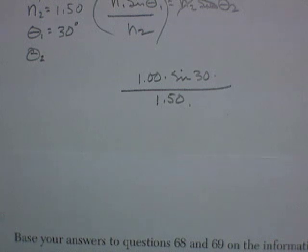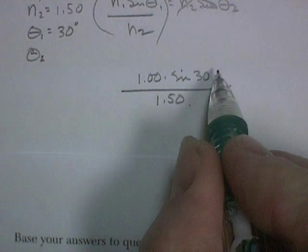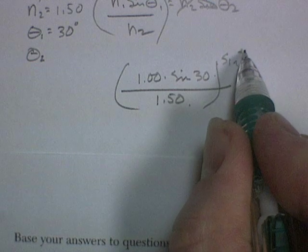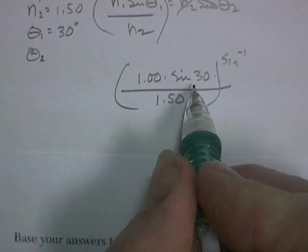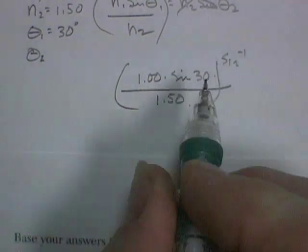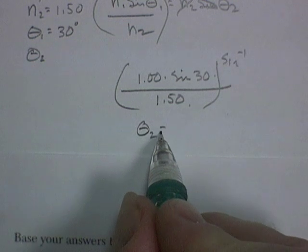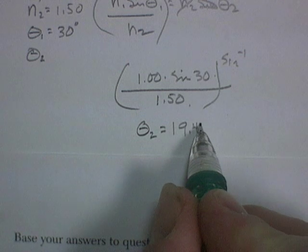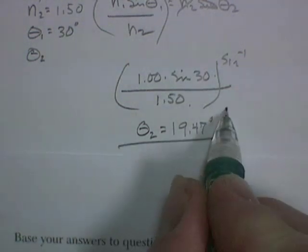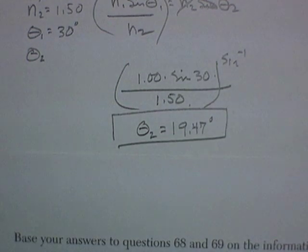Get your calculator out. Don't forget to take the inverse sine of your answer. If you do this, you get 0.3 repeating. And then if you take the inverse sine of it, you get an angle of refraction equal to 19.47 degrees. That's worth two points.